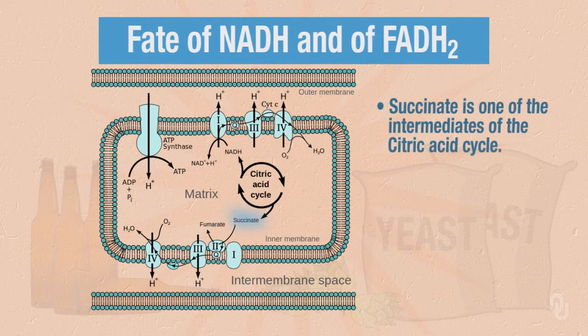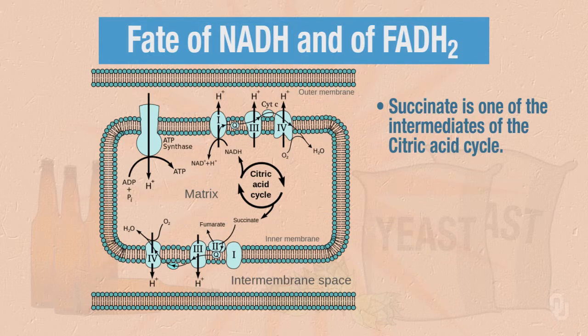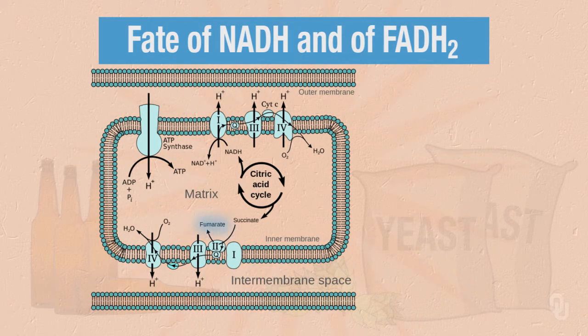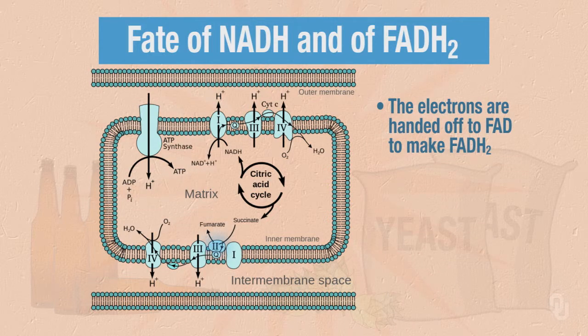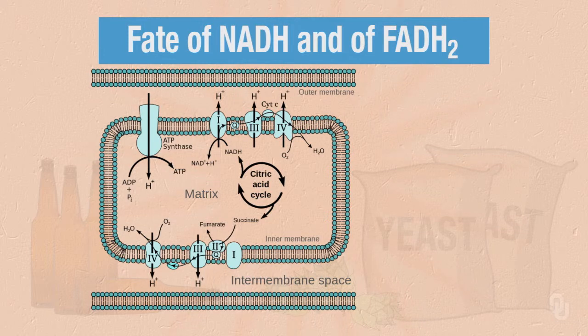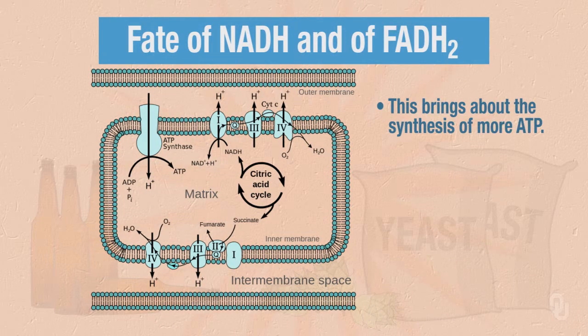As we noted on the previous slide, succinate is one of the intermediates of the citric acid cycle. As succinate undergoes the dehydration reaction to form fumarate, those electrons are handed off to FAD to make FADH2. This occurs in complex 2, shown on the bottom of this scheme. Those electrons move through complex 2 to coenzyme Q, or ubiquinone, which is simply symbolized by the capital Q. The Q moves to complex 3, and basically we continue our discussion. Complex 3 pumps protons, hands the electrons off to cytochrome C. The electrons move from cytochrome C to complex 4, where oxygen is the final electron acceptor, and more protons are translocated, and those protons can flow through ATP synthase and bring about effectively the synthesis of more ATP.